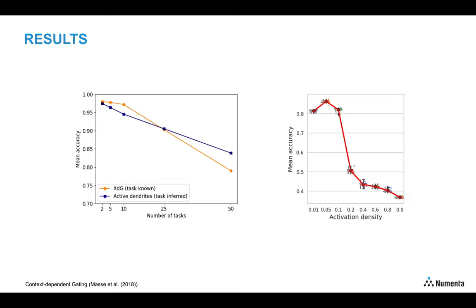We tested our active dendrite networks on permuted MNIST and our models are competitive with context-dependent gating, or XDG, a benchmark method for continual learning. Furthermore, we showed sparse representations are important as the network is more prone to forgetting without them.